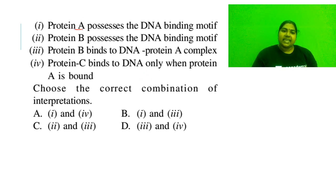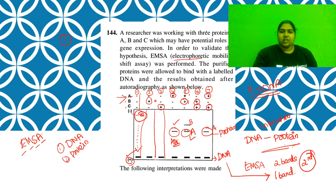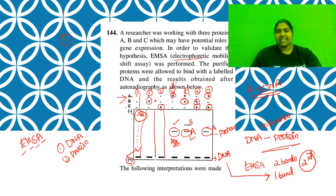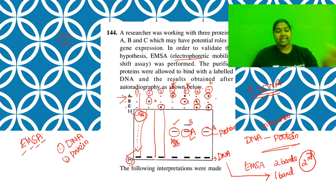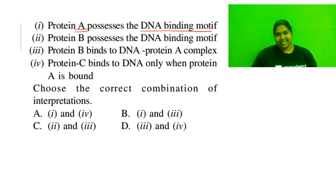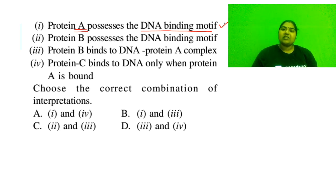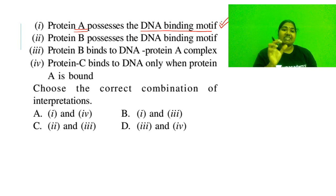Now let us check the options. Option 1: protein A possesses a DNA binding motif - true or false? Wherever protein A is added - lanes 4, 5, and 7 - you see a band. Wherever protein A is added you see a band, which implies protein A is definitely interacting with DNA. That means protein A definitely has a DNA binding motif. This is an absolutely correct statement.